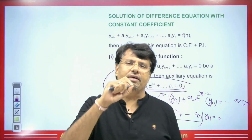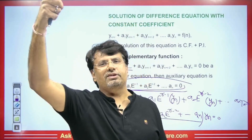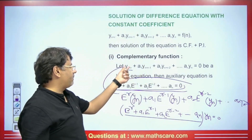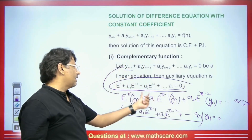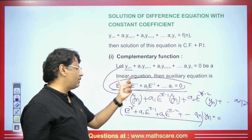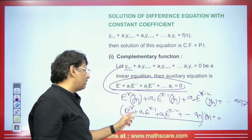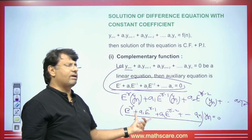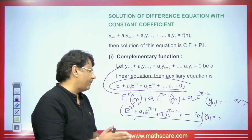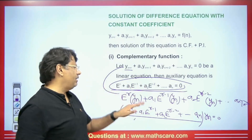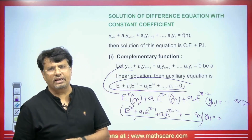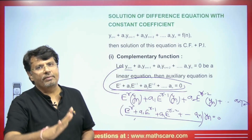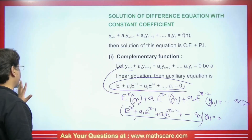In differential equations, wherever we had D, we would replace it with M to find the value. In the same way, we will convert yn+1 into the shift operator. After converting into the shift operator, put it equal to 0 — this is the auxiliary equation. In place of E, we put M and find the roots. Based on those roots, we get the complementary function, just like in a differential equation.